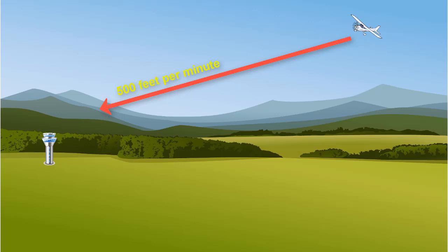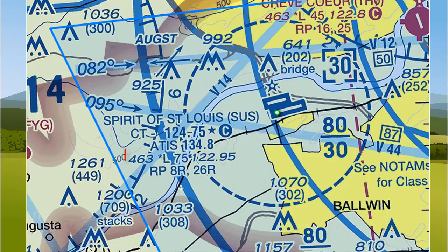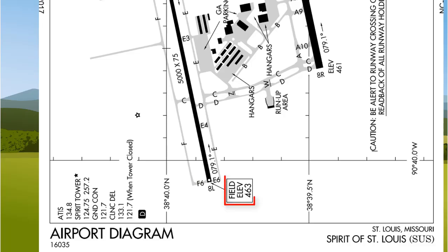Next you want to get the airport elevation. For the Spirit of St. Louis airport this is 463 feet, and this can be seen by looking at sources such as charts on skyvector.com or the airport diagram.